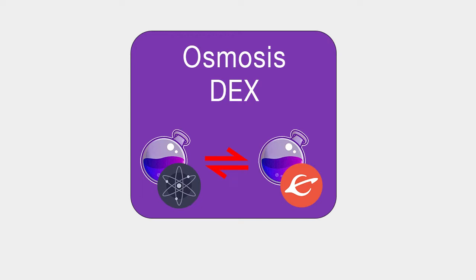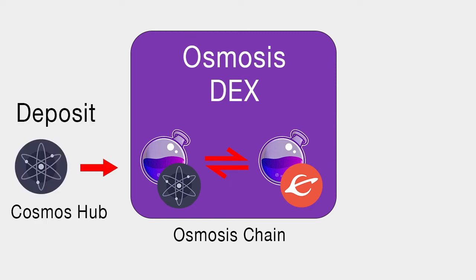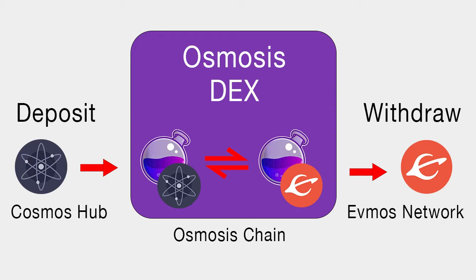Osmosis DEX is the leading DEX in the Cosmos ecosystem and runs on their own chain called Osmosis Network. The Cosmos ecosystem uses the IBC transfer option to send coins between chains fast and securely. So the easiest way to access Osmosis DEX is to send an ATOM coin to the Osmosis chain from the Cosmos Hub. Then you can swap your ATOM to USDC or other coins by using Osmosis DEX.